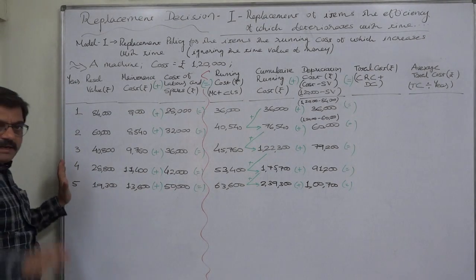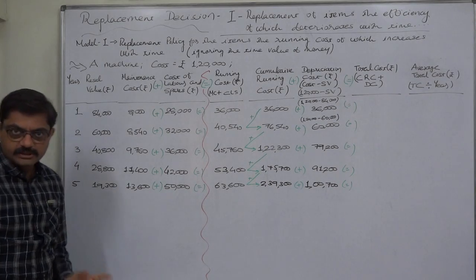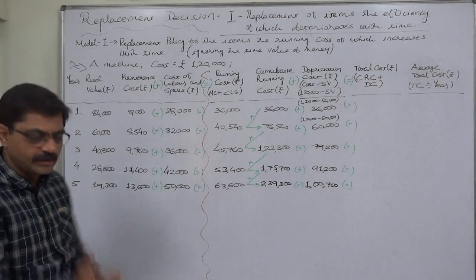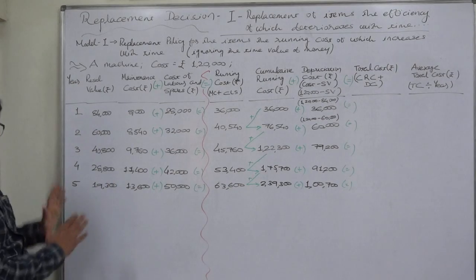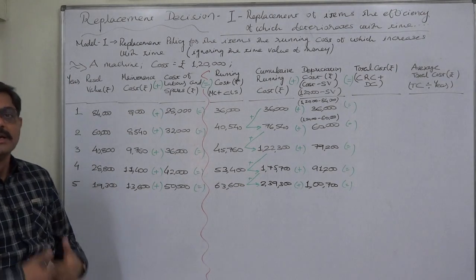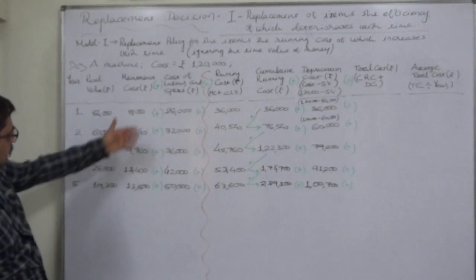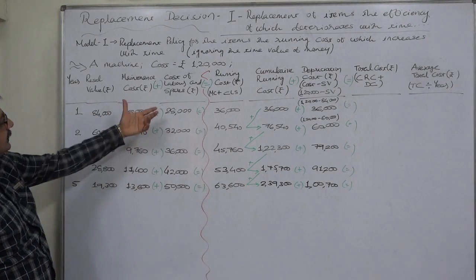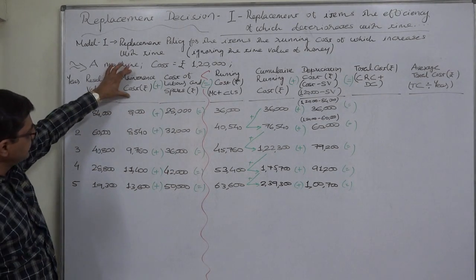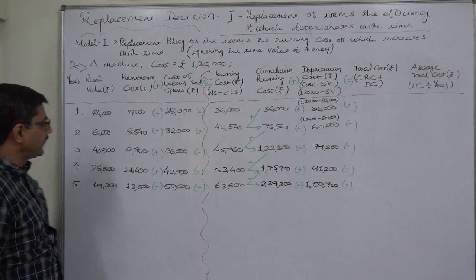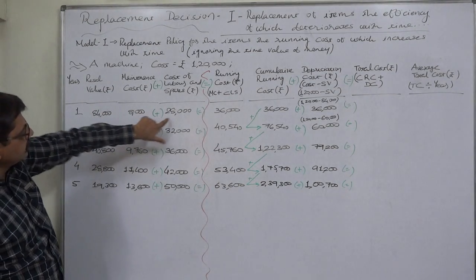There is data for five years. The resale value decreases with time - this is more practical and different from the previous lecture where resale value was constant. As time passes, the efficiency of the machine deteriorates, so resale value decreases. The running cost has two main components: maintenance cost, and cost of labor and spares. Adding these two gives the total running cost.